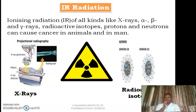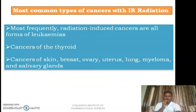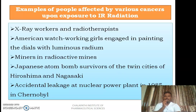Coming to IR radiation, ionizing radiation of all kinds — x-rays, alpha rays, beta rays, radioactive isotopes, protons, and neutrons — can cause cancer in animals as well as humans. The most common type of IR radiation exposure is with x-rays and radioactive isotopes. Most common types of cancers with IR radiation include leukemias, cancers of the thyroid, skin, breast, ovaries, uterus, lung, myeloma, and salivary glands.